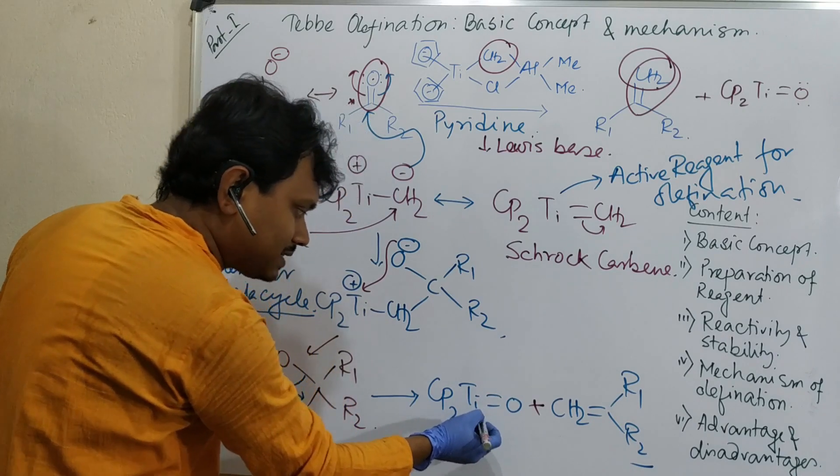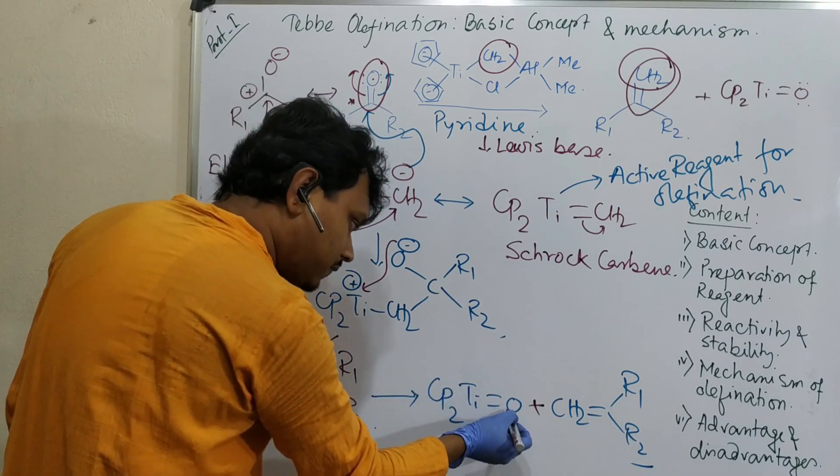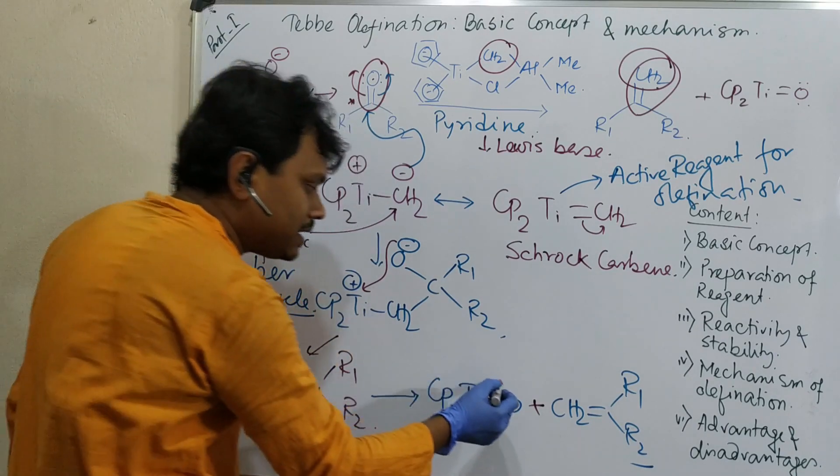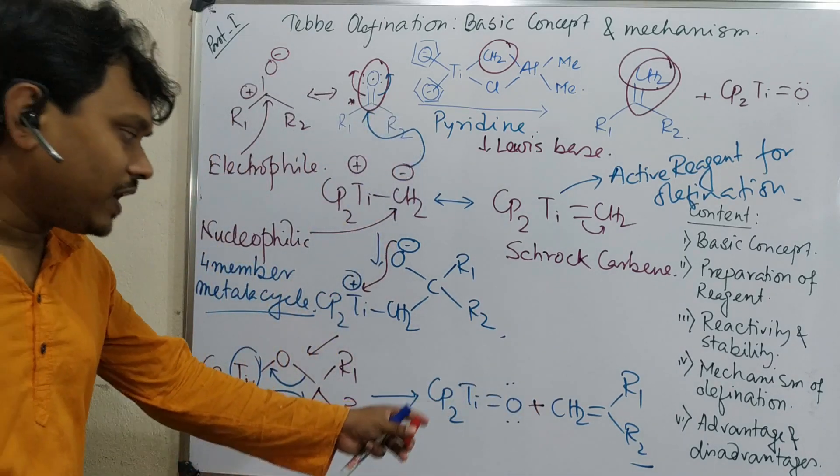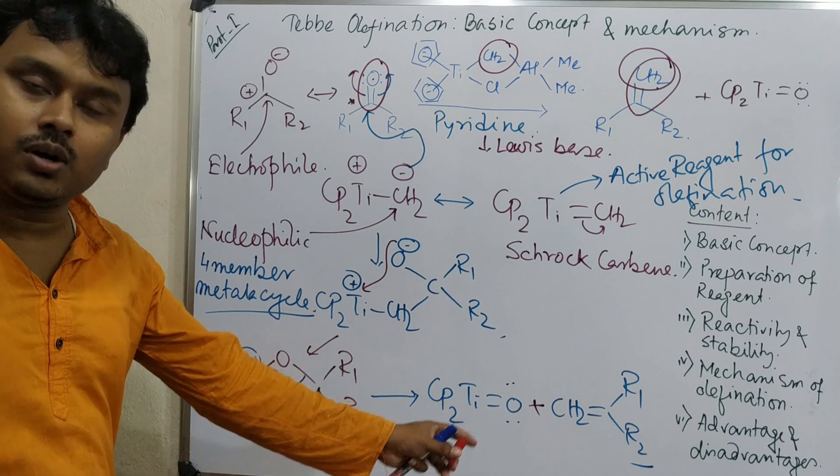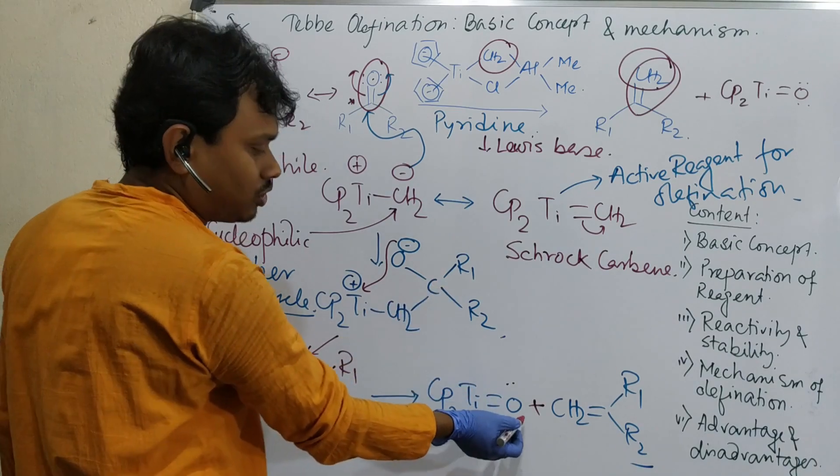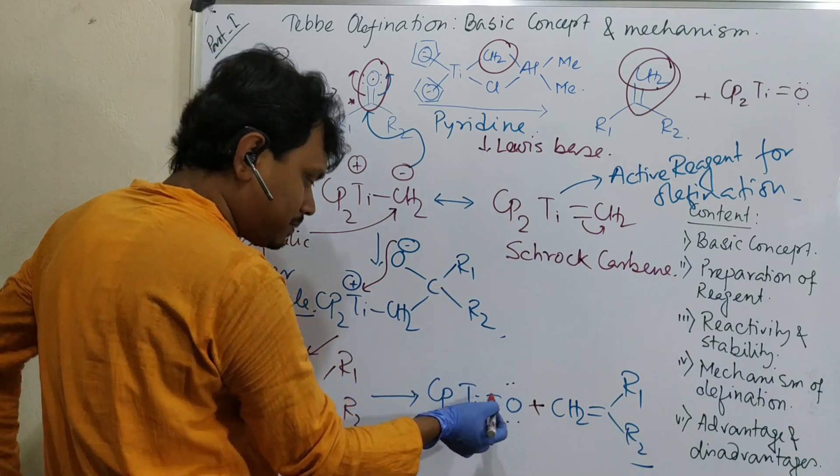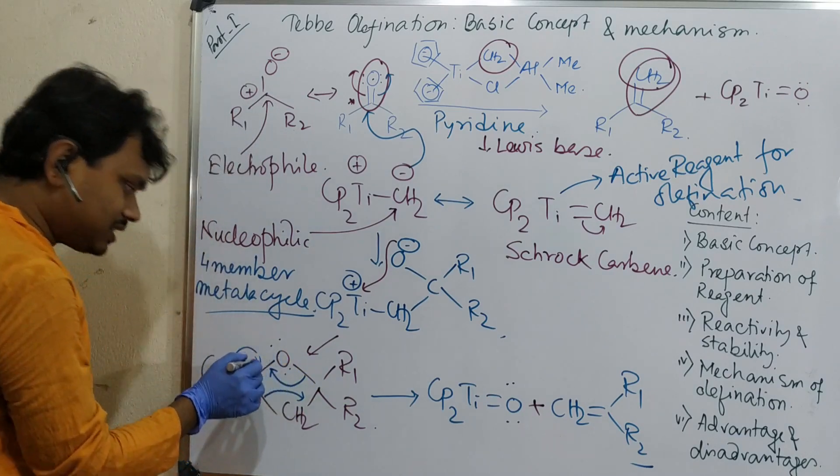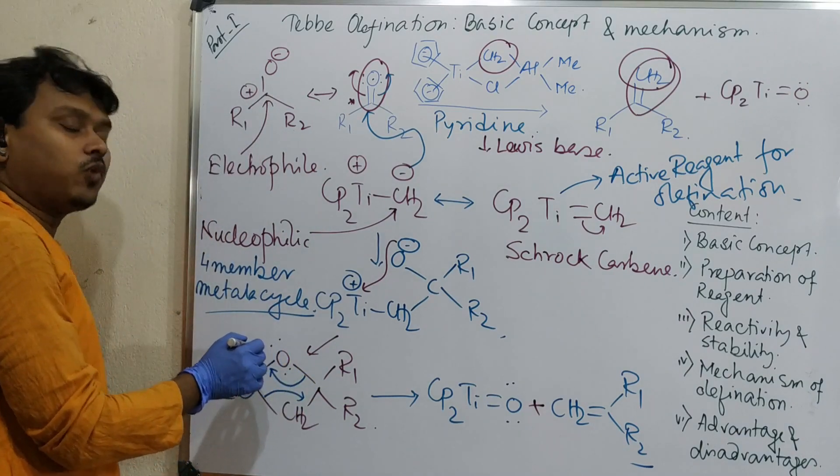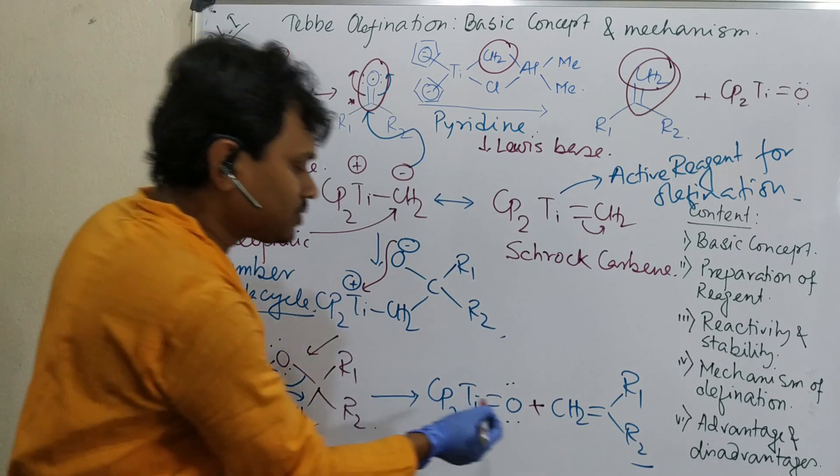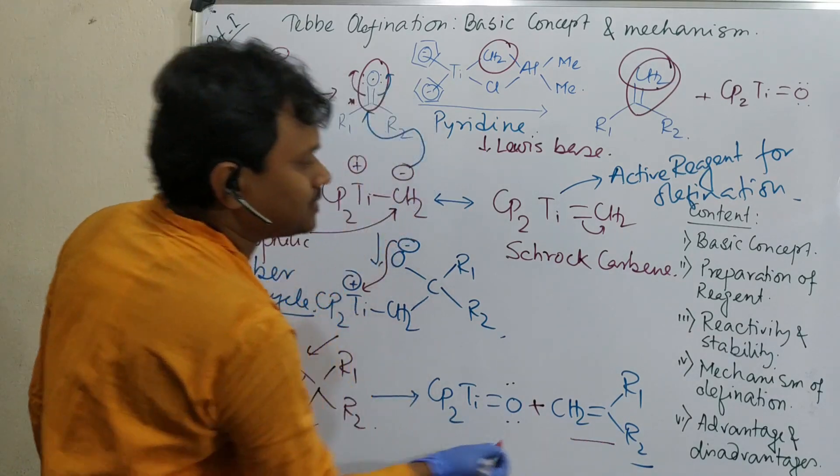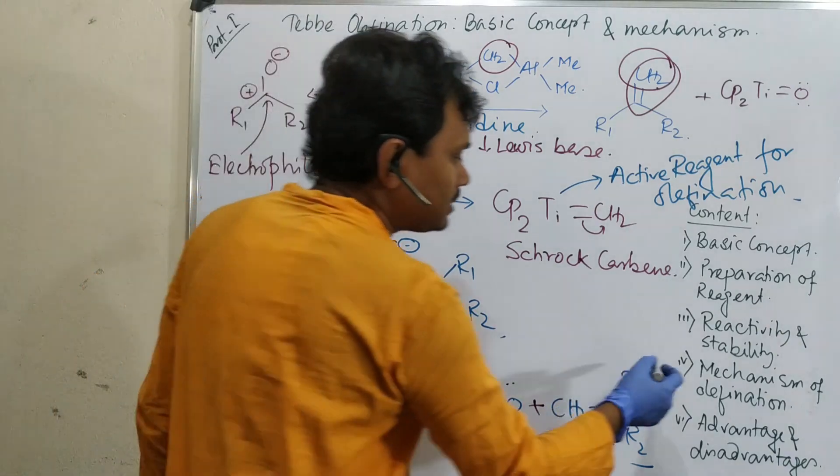And second, why this titanium oxygen bond is stable? Because first of all this is strongest. Second, this lone pair of oxygen could be further donated to the vacant orbital of titanium. But right now this is not possible because it is sp2 hybridized. But previously in this condition you can think that further donation, this multiple bond formation which results in the stable titanium oxygen bond. So this is the alkene. So we have discussed about the mechanism.